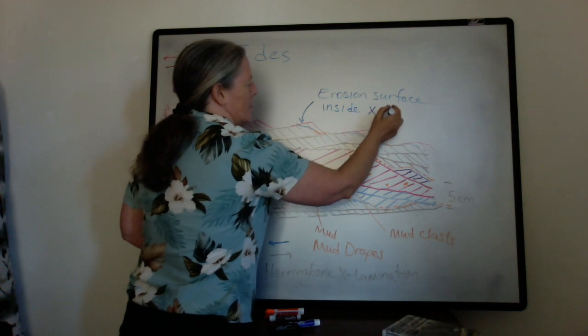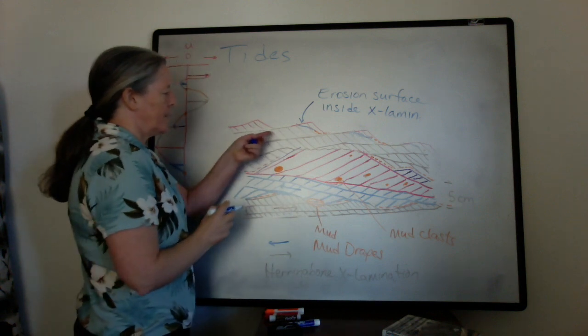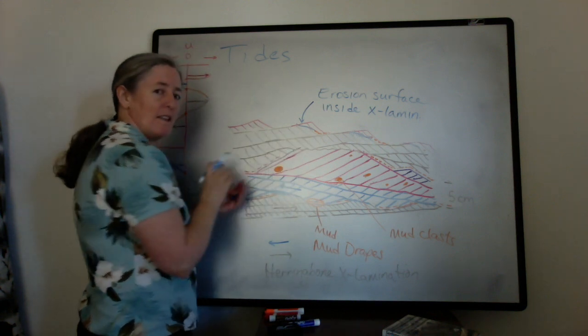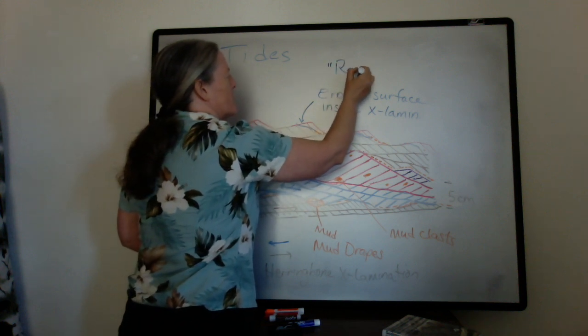So this lamina and this lamina are truncated and the lamina on top sort of downlap or onlap that surface. So this is an erosion surface that's inside the cross lamination. But it's not one of these main bounding surfaces that divides the ripples. And we call this a reactivation surface.